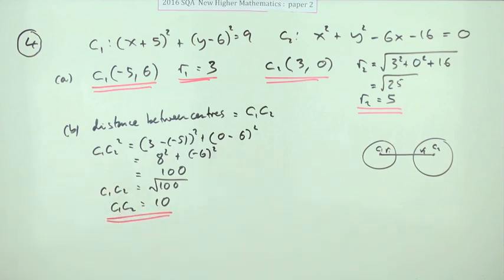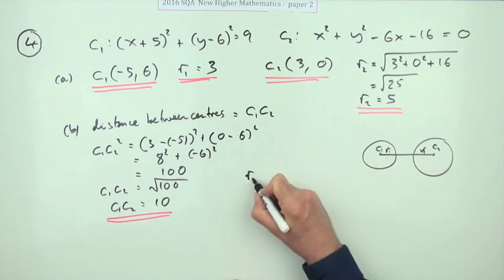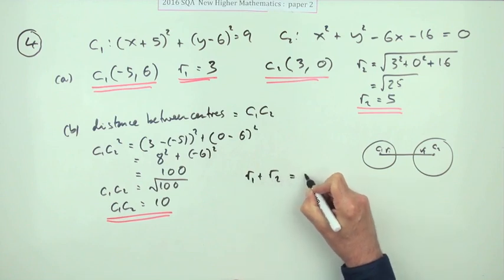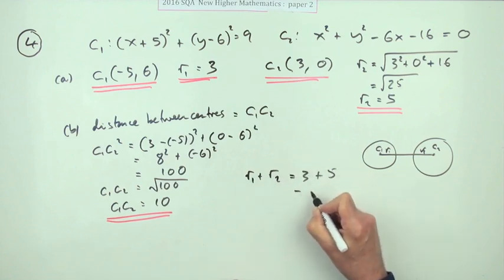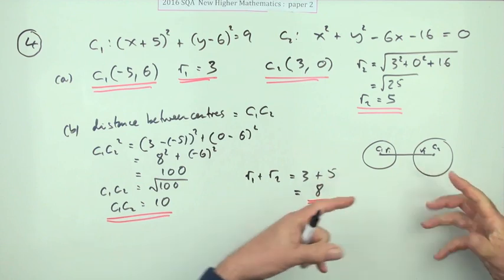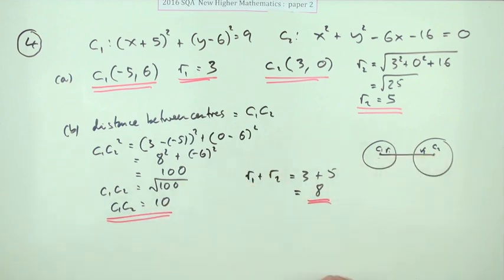The next thing is, so what do the two radii add up to? What's R1 plus R2? Well that's three plus five which is eight. So their arms aren't big enough to grab hold of each other, so they're separate and they don't intersect.